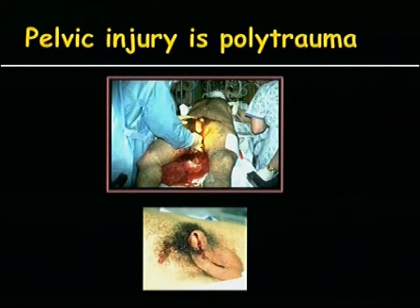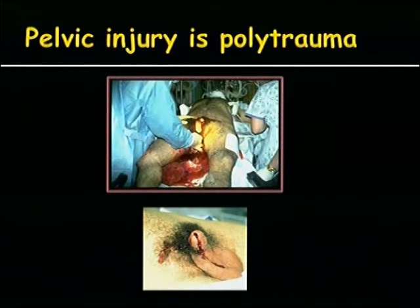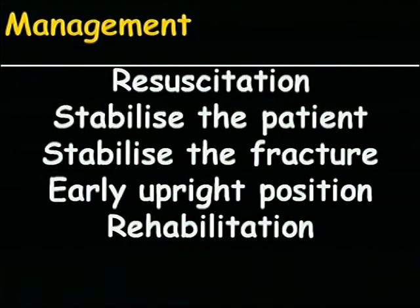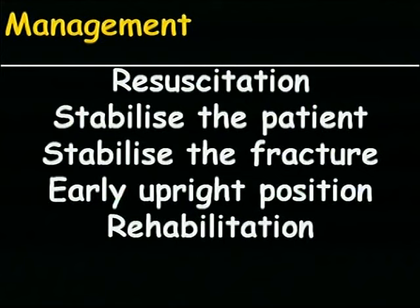Coming to management: a pelvic injury should be treated as a polytrauma because it can involve visceral injury, urethral injury, bladder rupture, urethral damage, pre-sacral plexus damage, and the patient can bleed and die in front of you. The management goals are: first, resuscitate the patient — do not focus on classification first. Then stabilize the patient, stabilize the fracture, facilitate early mobilization, and then rehabilitation. Stabilization and resuscitation are the top priorities.